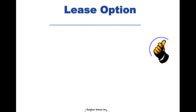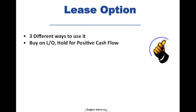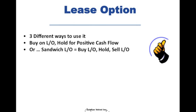I'm going to teach you about lease options and let me see if I can do it in 10 minutes or less. First off, there are three different ways to use a lease option. You can use it to buy a property using a lease option and then just hold it for positive cash flow, and then when it appreciates or you want to sell it later on, you sell it. Or you can do a sandwich lease option, which means you buy a property using a lease option and then turn around and sell the property to somebody else giving them a lease option and make a profit on the difference between the terms. Or you can use a lease option to sell a flipper that doesn't flip.